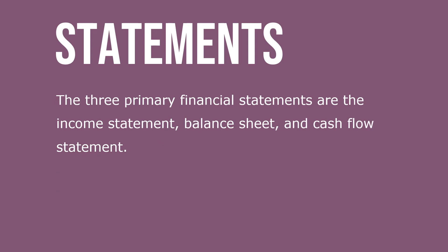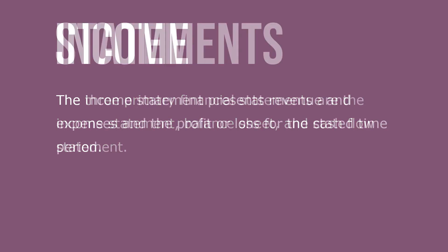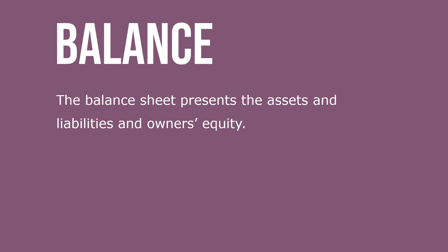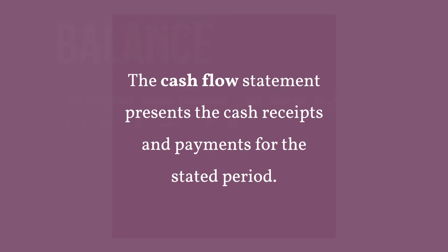There are three primary financial statements, which include the income statement, the balance sheet, and the cash flow statement. The income statement presents revenue, expenses, and profit or loss for the stated time period. The balance sheet presents the assets, liabilities, and owner's equity. The cash flow statement presents the cash receipts and payments for a stated period.